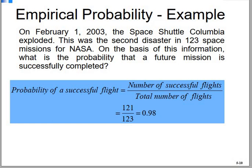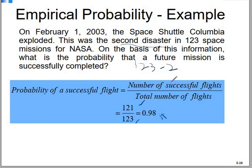For example, on February 1, 2003, the Space Shuttle Columbia exploded. This was the second disaster in 123 space missions from NASA. The probability of a successful future mission is 121 divided by 123, which equals approximately 0.98.